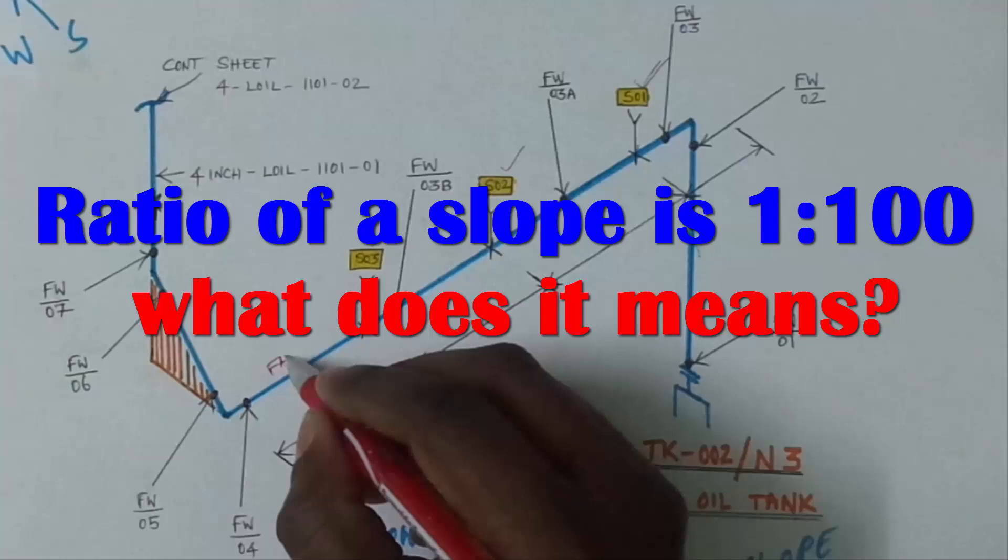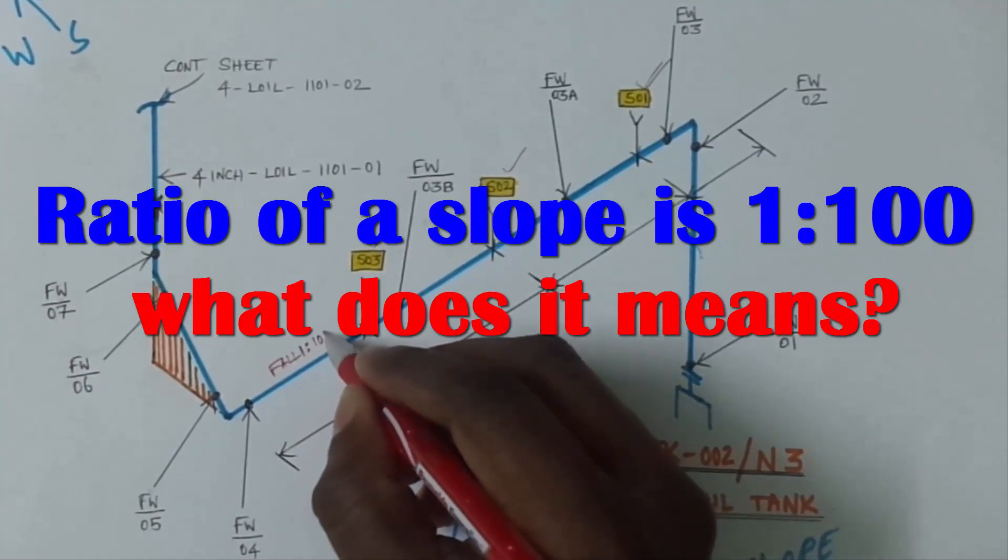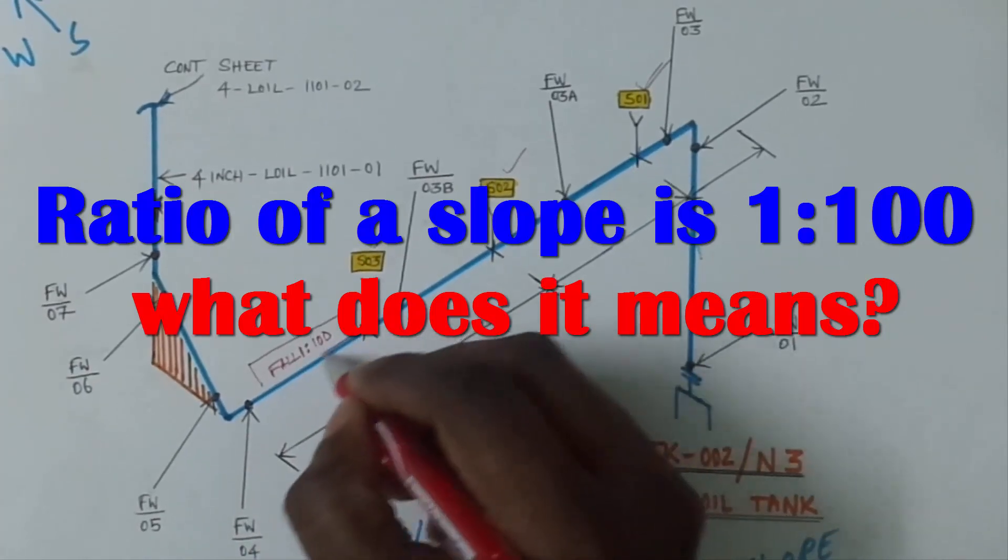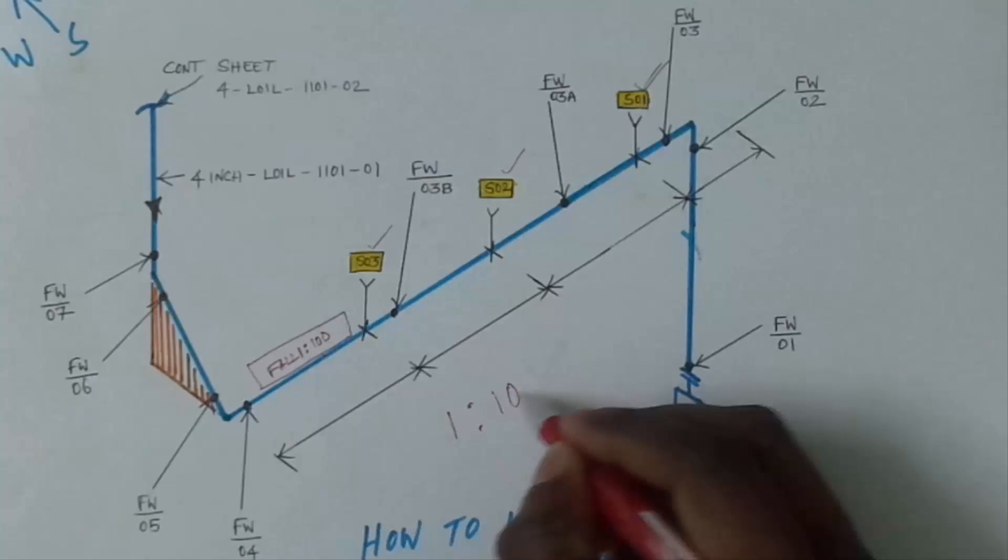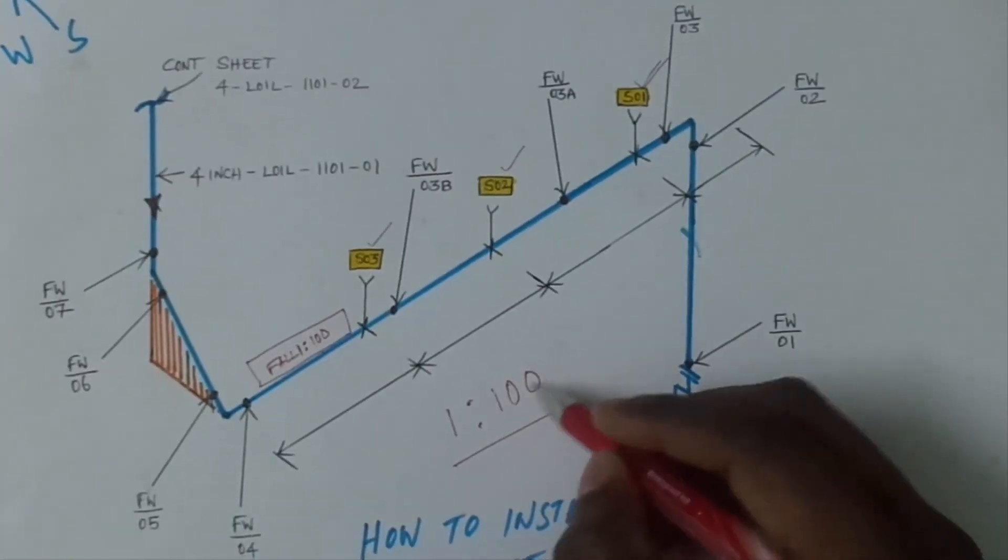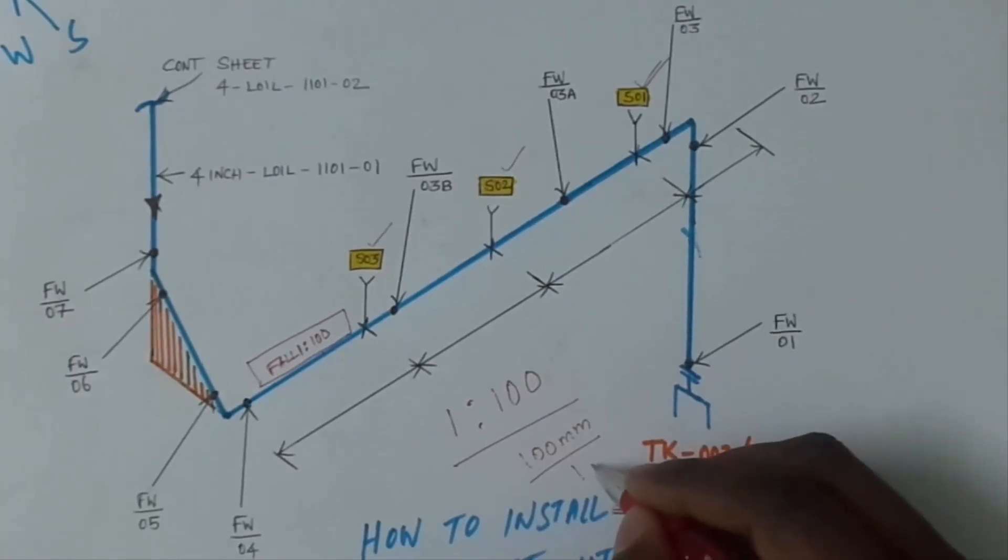So what is the meaning of 1 is to 100? Every 100 mm we have to give 1 mm slope.